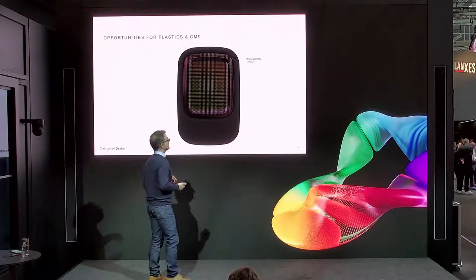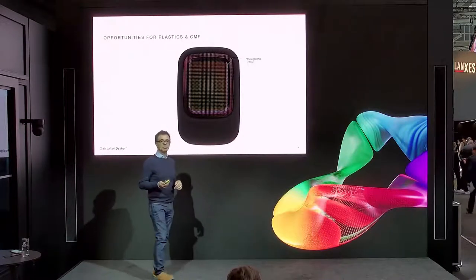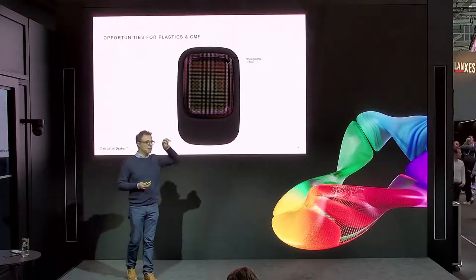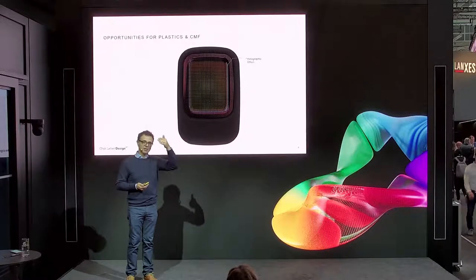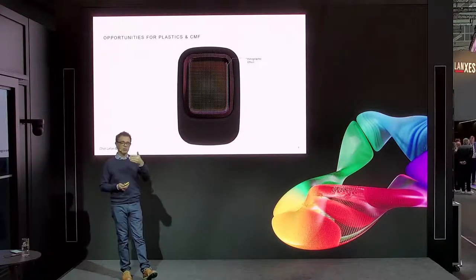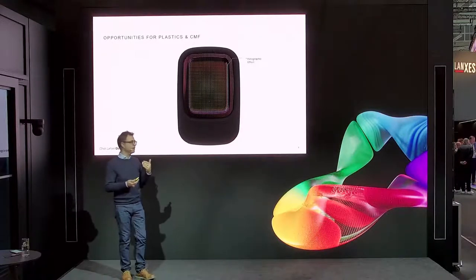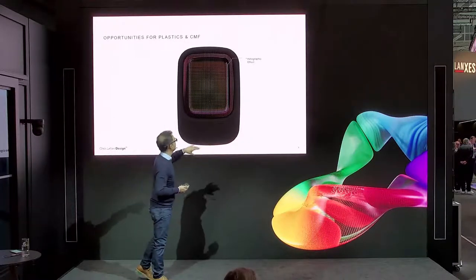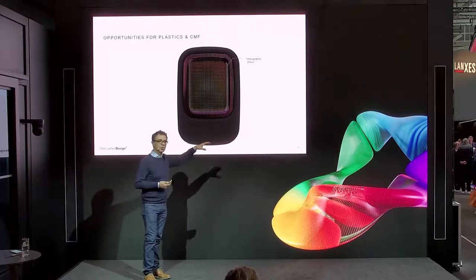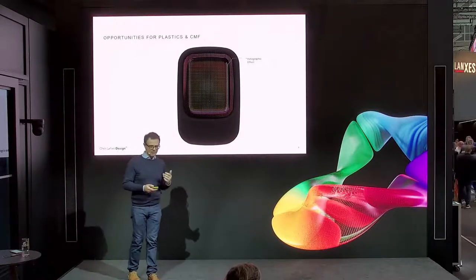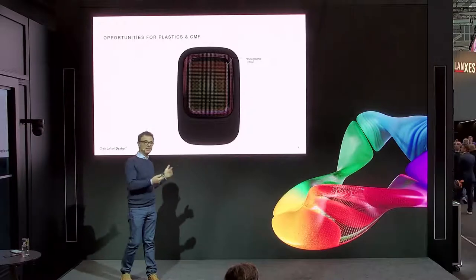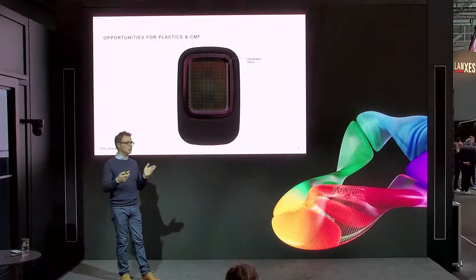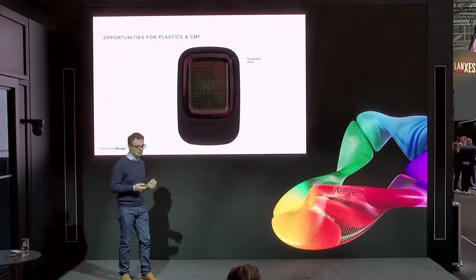We can also use rapid heat cycle molding to create holographic effects. By having very fine textures in the tool at an almost microscopic level, that allows holographic effects to be created. I'm sure there are examples on the Covestro booth that illustrate that. Aesthetics are very important because it's about storytelling and understanding the problems, but also the opportunities with these types of materials.